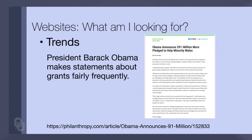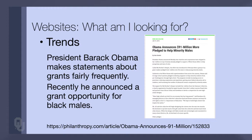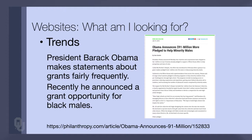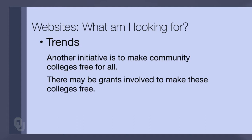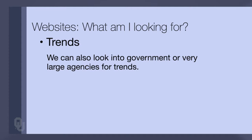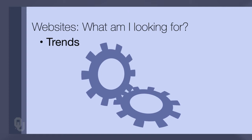You want to look at websites and see how many years a particular agency or foundation has given money so you can consider it a dependable or stable grant resource. You might also be looking for trends. For example, President Barack Obama has initiated grants supporting black males in various activities including K-12, and an initiative where community colleges might become free. Other trends include looking at large granting agencies such as the Bill and Melinda Gates Foundation or the Kellogg Foundation to see the trend in funding.